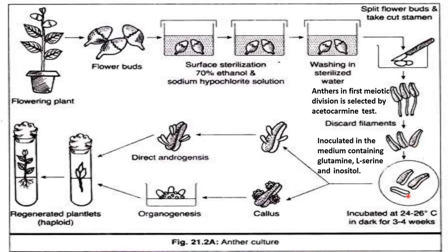The selected anther is inoculated into a medium containing glutamine, L-serine, and inositol, and then incubated at 24 to 26°C in the dark for 3 to 4 weeks. The anther will either undergo direct androgenesis to form a plantlet, or it could undergo callus formation followed by organogenesis, ultimately forming a haploid regenerated plantlet.